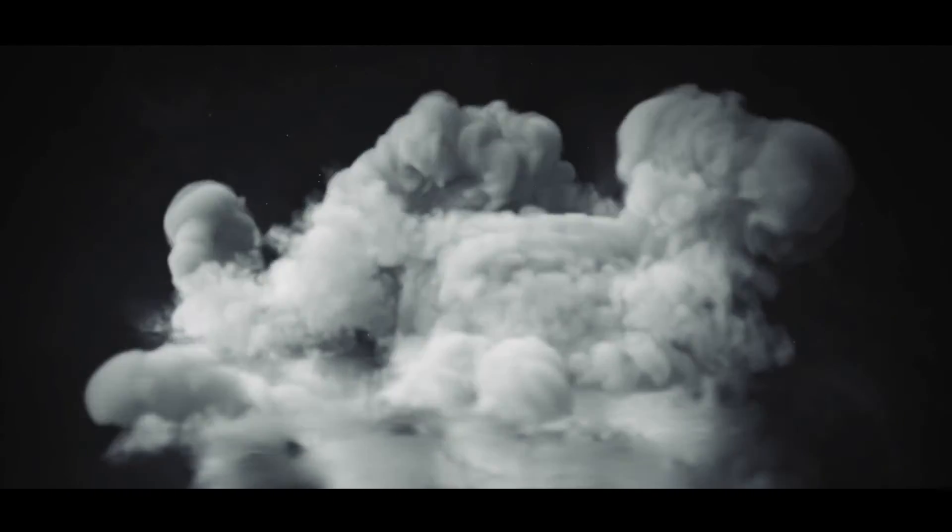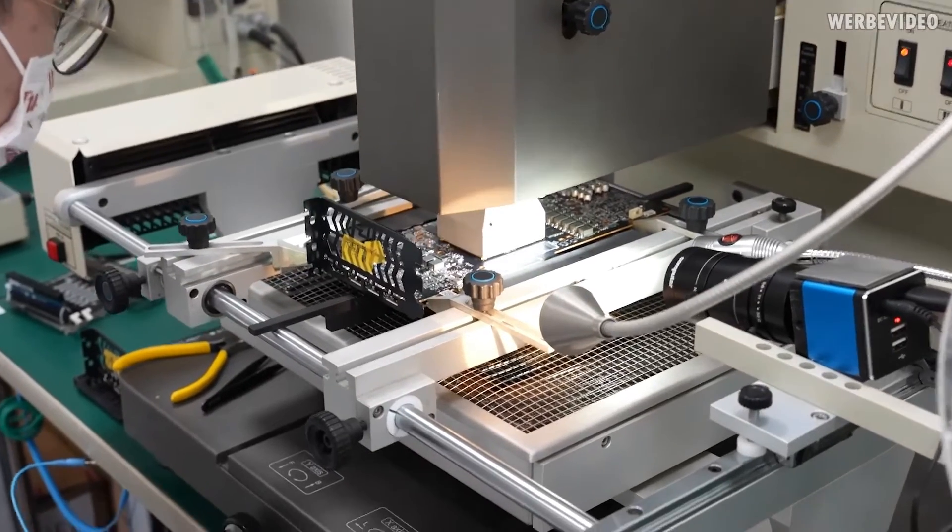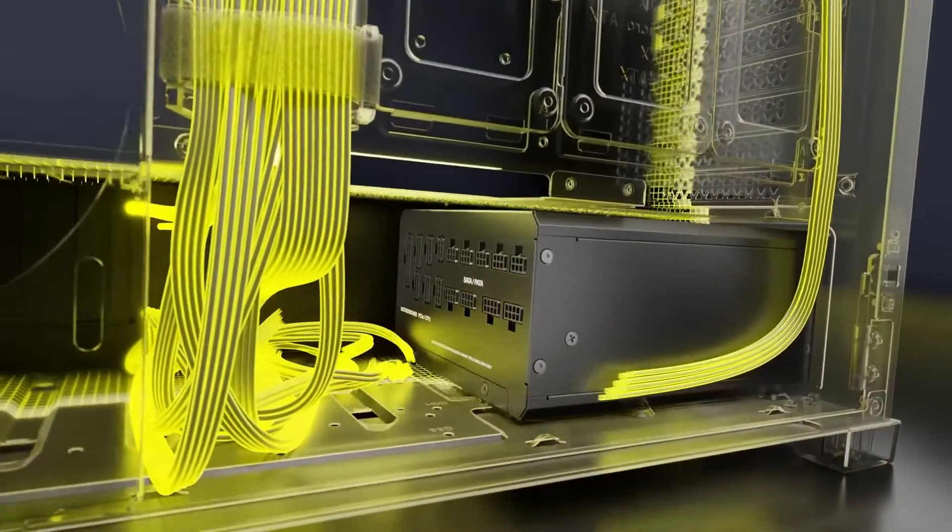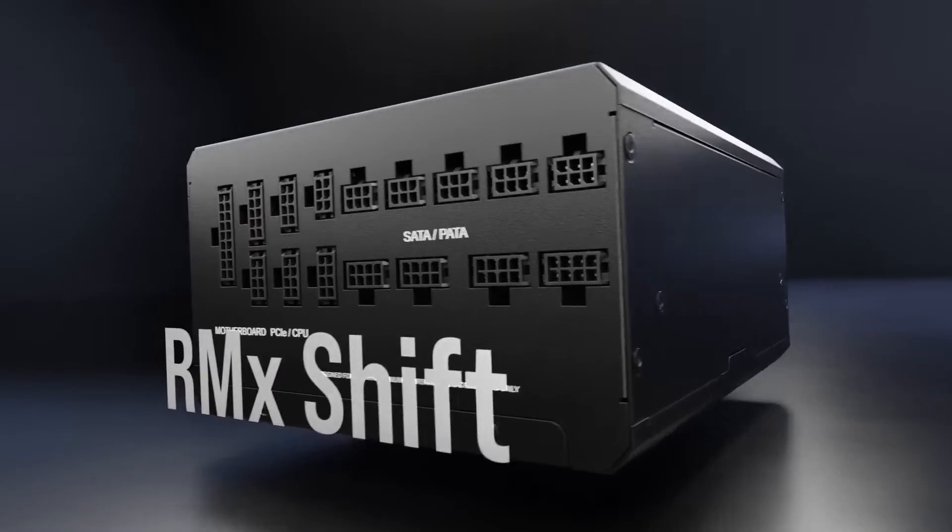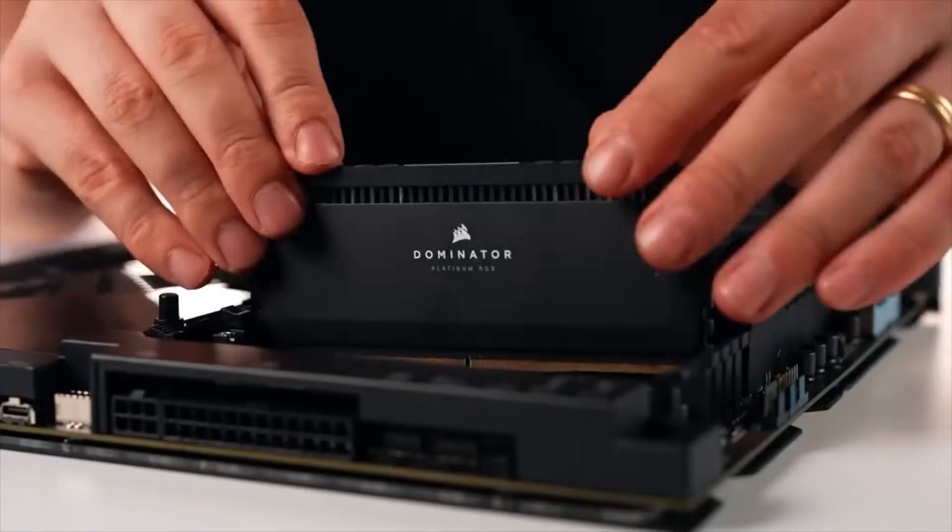Number 3: Corsair. Long trusted for quality PC components, Corsair started as an L2 cache manufacturer before expanding to DRAM and later a variety of PC components. As they're partnered with Seasonic, one of the best PSU OEMs, their PSUs are consistently ranked as some of the best available.